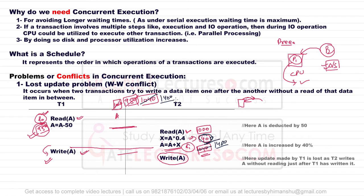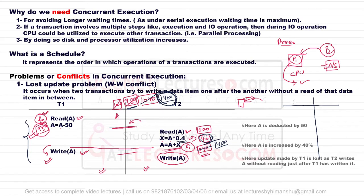You can see that during parallel execution, due to concurrency and preemption, these two transactions produce an incorrect result. Instead of computing 0.4 of 950 (T2 should have used T1's updated value), T2 overwrites with 1,400, which is wrong. Similarly, consider another example: person P1 wants to deposit 500 rupees and P2 wants to subtract 500 rupees from the same account containing 1,000 rupees.